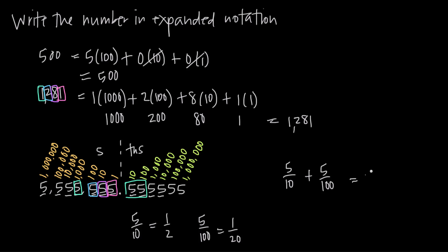If we do this computation, we'd see that we get 55 over 100, which is the same as 11 over 20. The most important things to remember about place value: all the places to the left of the decimal point have the suffix 's', and all the places to the right have the suffix 'ths'. So we say the tens place to the left and the tenths place to the right. When writing in expanded notation, multiply numbers to the left of the decimal point by their place, and divide numbers to the right of the decimal point by their place.